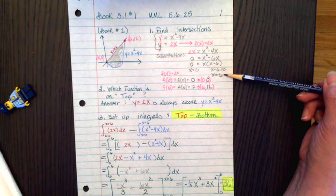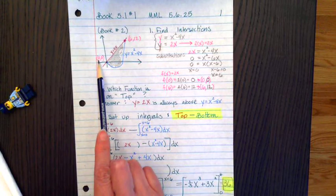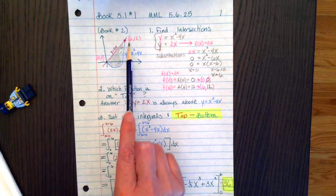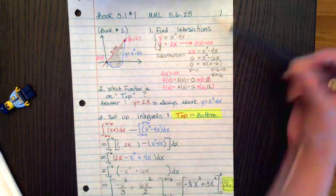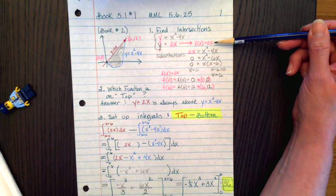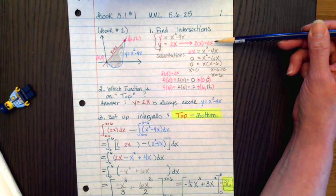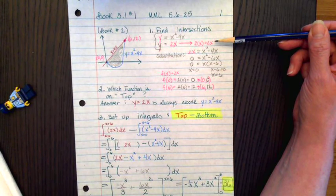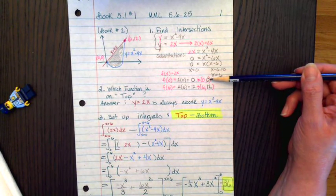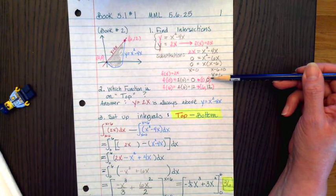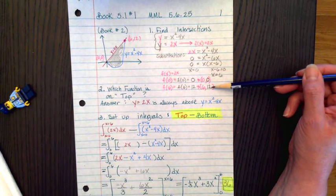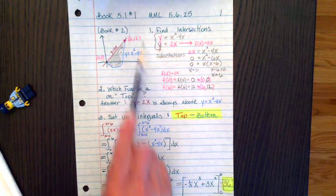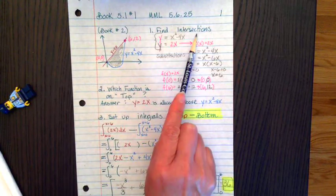Those are the two x points, the 0 and the 6. And then y is the same as f of x. So y is 2x. When x is 0, y is 0. When x is 6, y gives us 12, because 2 times 6. So the first step is to find the points of intersection, and we find that with precalculus algebra.